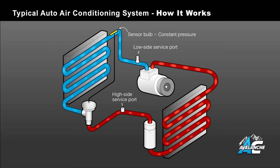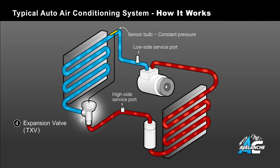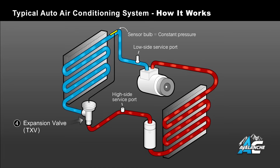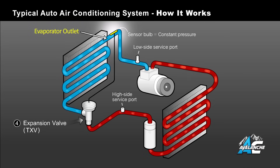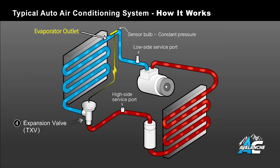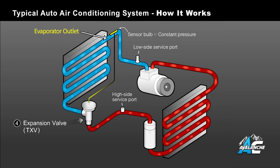A number of car manufacturers started using a thermal expansion valve, or TXV, to make the air conditioner operate more efficiently and give better cooling. The TXV system, as shown in our diagram, has a small temperature bulb located at the outlet of the evaporator, which continually adjusts the refrigerant flow through the expansion valve and into the evaporator, based on the evaporator's temperature and pressure.